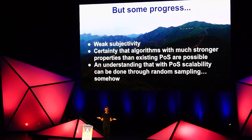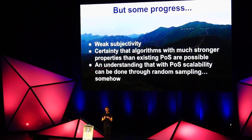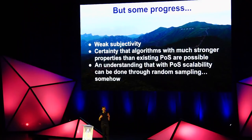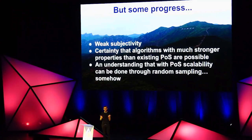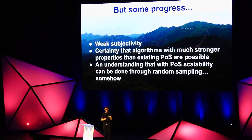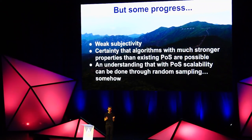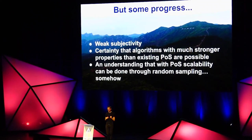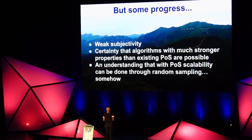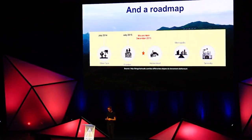So in 2014 there was still some progress. There was this concept of weak subjectivity that we came up with, which was a semi-formal security model that tries to capture the idea of under what conditions are proof-of-stake deposits, slashing, and all of these concepts actually secure. Also, we got more and more certain that algorithms with much stronger properties than the proof-of-stake algorithms that existed at the time — things like pure coin and all of its derivatives — were actually possible. And there was a growing understanding that there was some kind of proof-of-stake scalability strategy that you could do through random sampling, but we had no idea how.